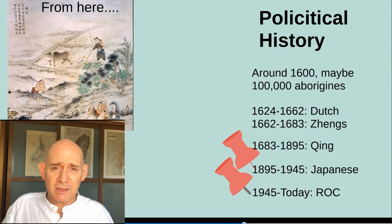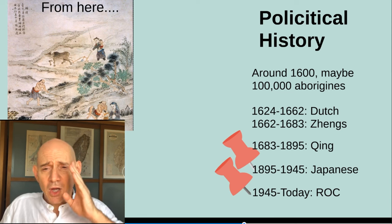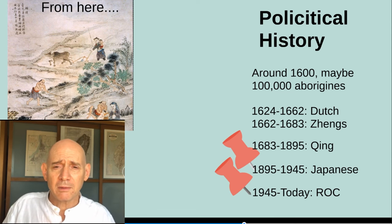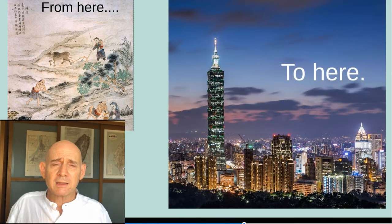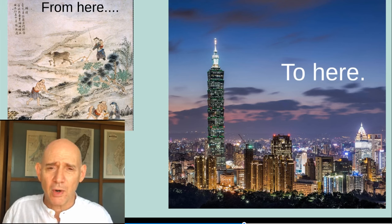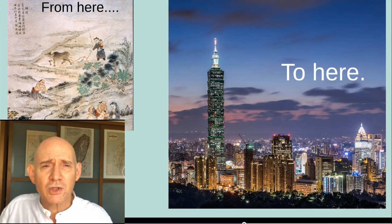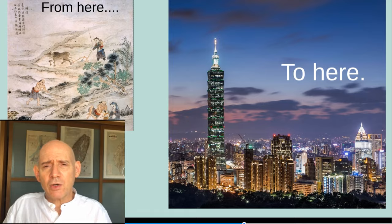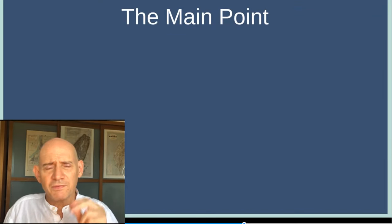We want to understand not really the political history of Taiwan, but how Taiwan went from an agricultural economy, a simple agricultural economy, to a very complex, modern, urban, high-tech economy. That's the story we want to understand. And I'll tell you my main point right off the top. When I look back over over 25 years of trying to understand Taiwan's economic development, the main point that I keep coming back to is that, at least in Taiwan, economic development has been a lot like surfing.